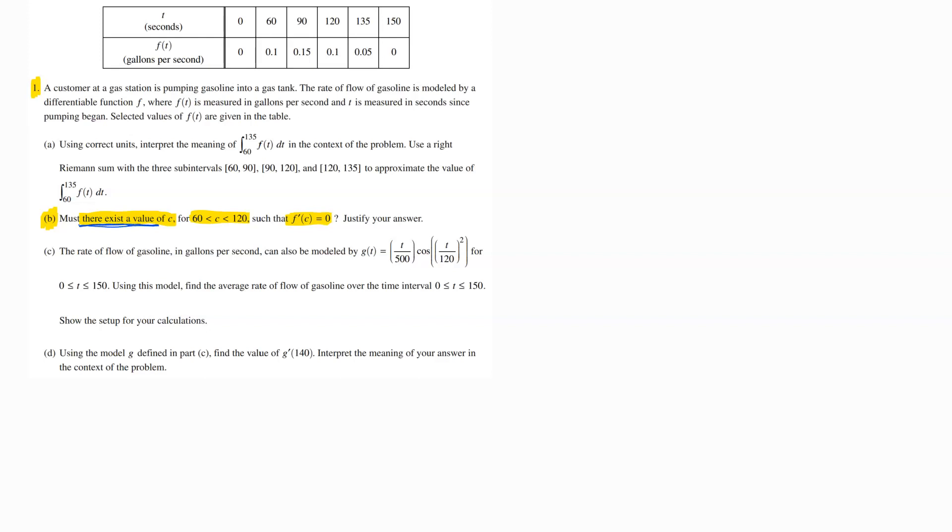Whenever they want to know that there must exist a value but they don't care what that value is, notice they're not asking us to go find that C value. They just want to know for sure that C value exists. And when they want to know that it does exist and it's a derivative value that you're looking at, 99 times out of 100 this is referring to the mean value theorem.